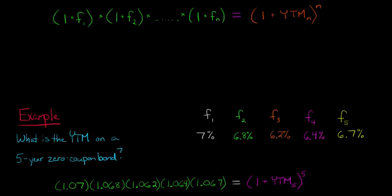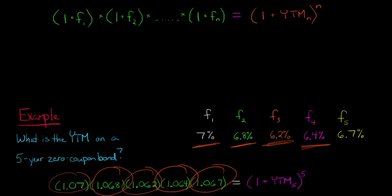It's a five-year zero-coupon bond, so we're going to go all the way up to the forward rate through year 5. So we're just saying 1.07 corresponds to the 7%, 1.068 corresponds to the 6.8%, 1.062 for forward rate 3, 1.064 for forward rate 4, and then 1.067 corresponds to the 6.7% interest for forward rate 5. So it's just that simple.